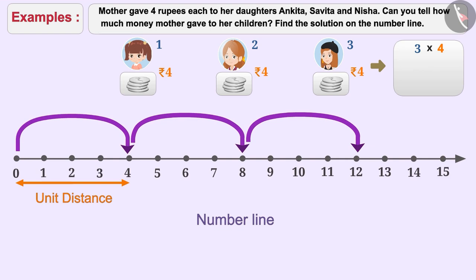So, after the last step, we reach twelve. This is the product of three multiplied by four. So, the total amount that the mother gave to her children is twelve rupees.